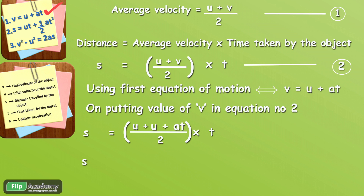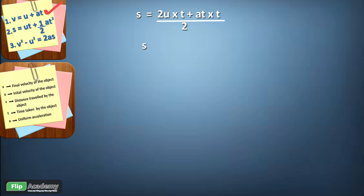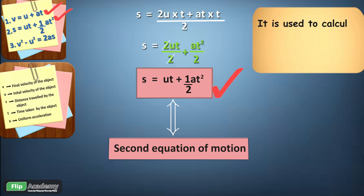Now we solve it. After opening the brackets and multiplying through by T, we get 2U plus AT, and the whole expression is multiplied by T over 2. Opening the bracket, T multiplies both terms, giving 2UT plus AT squared upon 2. The denominator 2 is divided into both terms; 2 and 2 cancel from the first term. So S equals UT plus half AT squared. This is the second equation of motion, used to calculate the distance traveled by the object in time interval T.